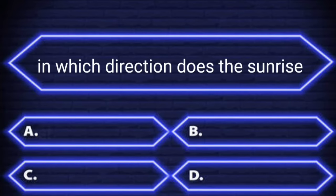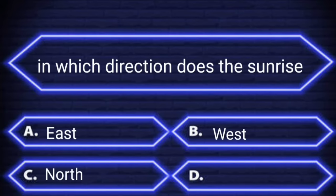As the sun rises, which direction does it rise from? A. East. B. West. C. North. D. South. Your time starts now.